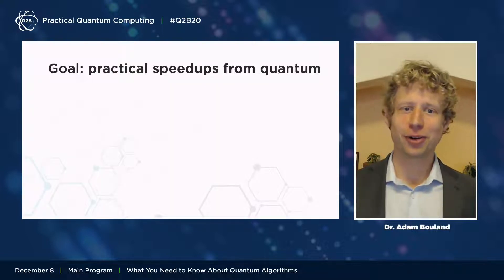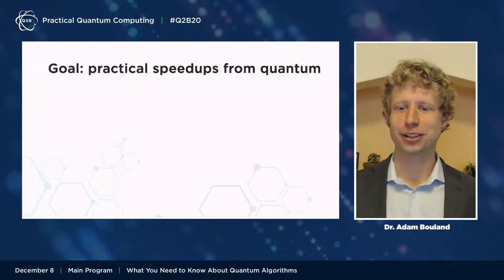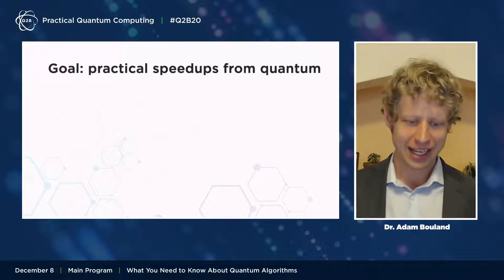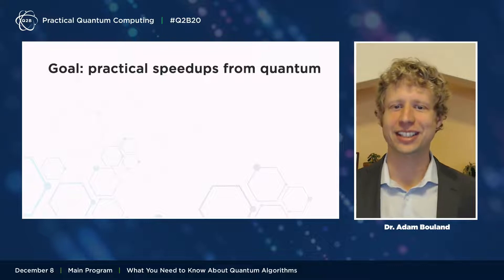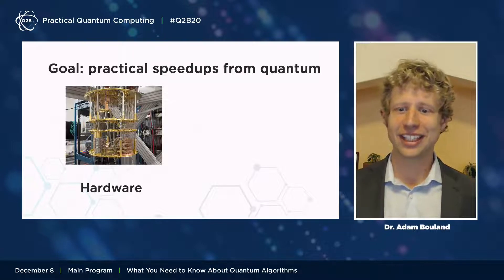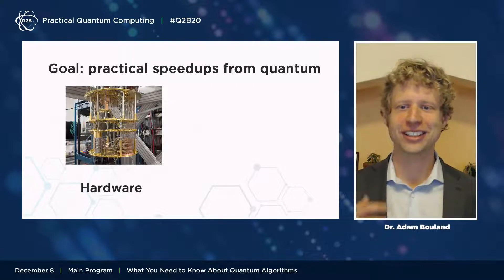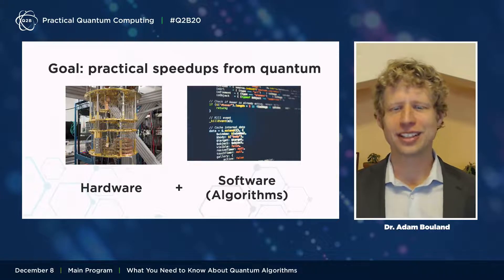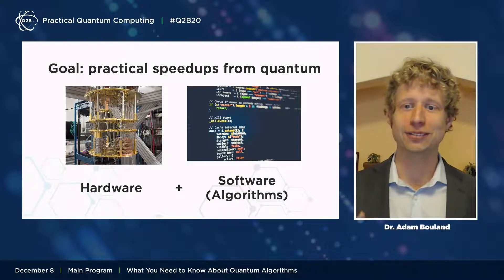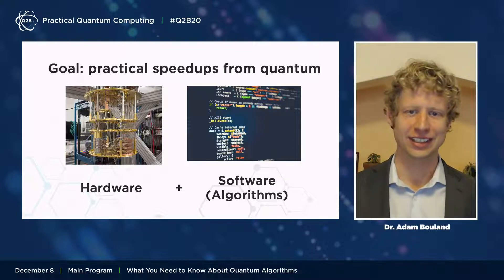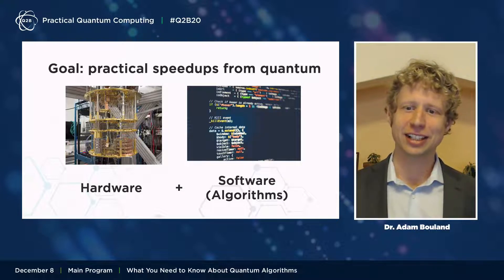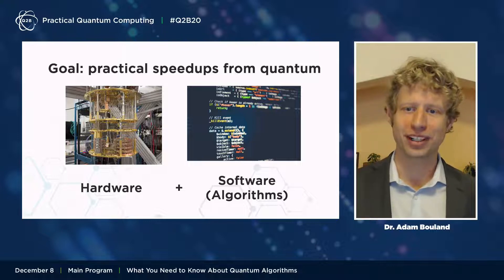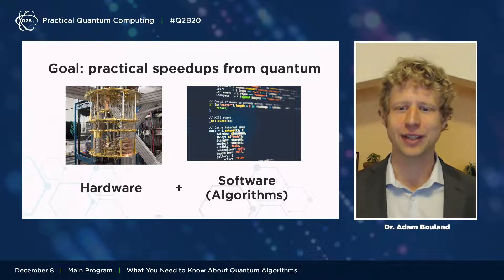The main goal of quantum computing is to try to build quantum computers and use them to deliver practical speedups, and there are two components necessary to achieve this. The first is quantum hardware — that's a physical quantum computer or the qubits you need to run on. But there's also a second component, which is quantum software or quantum algorithms, and today my talk is going to focus on that second part, because it's also an important part of bringing quantum speedups to fruition.